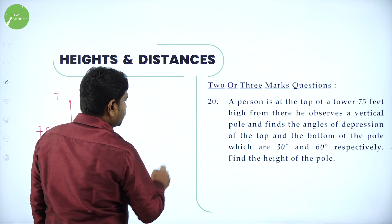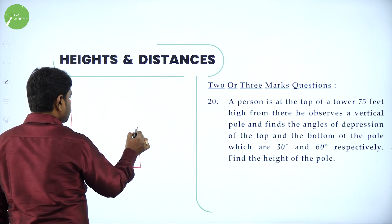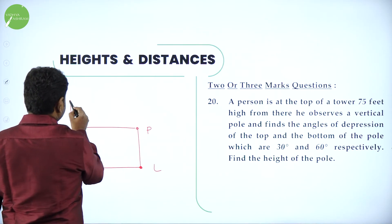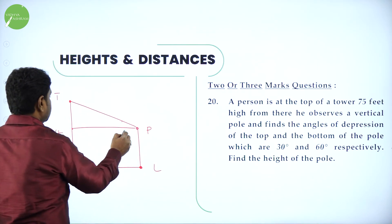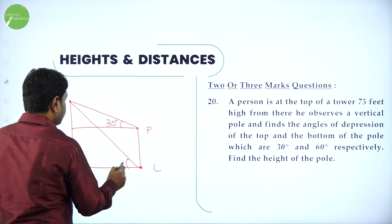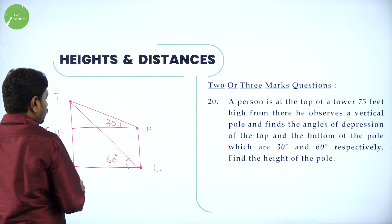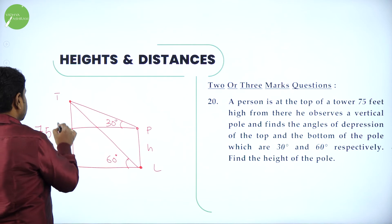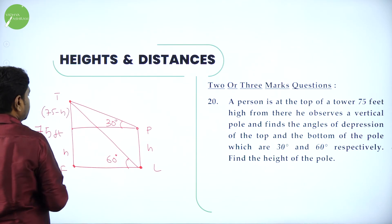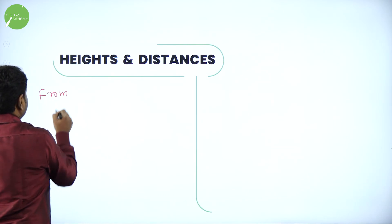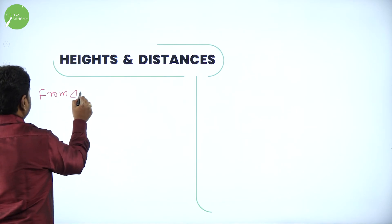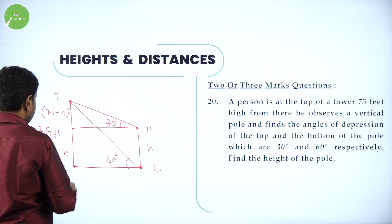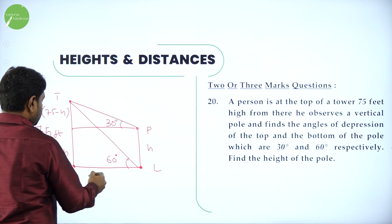TF is the tower with height 75 feet. PL is the pole. The person observes the top of the pole at depression angle 30 degrees and the bottom at depression angle 60 degrees. Let H be the height of the pole. The remaining vertical distance from the top of the pole to the observer level is 75 minus H.